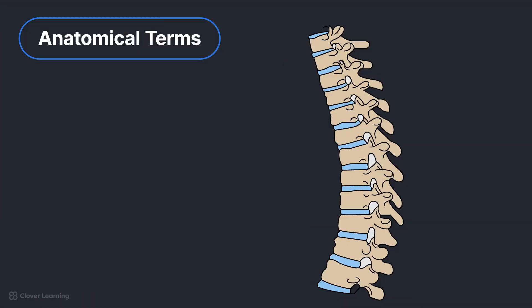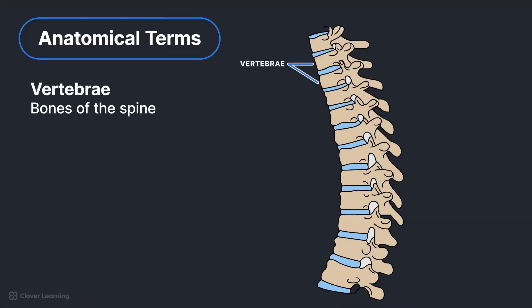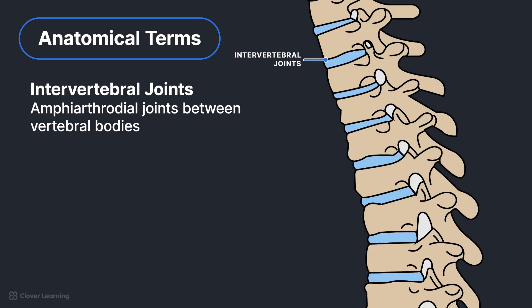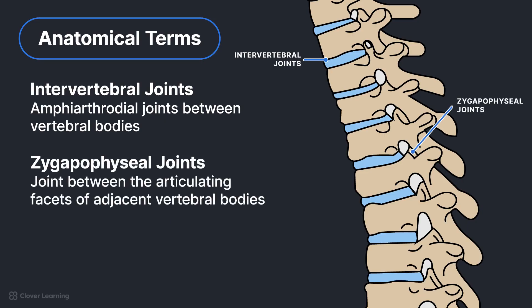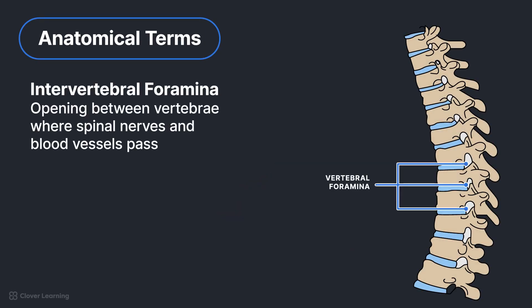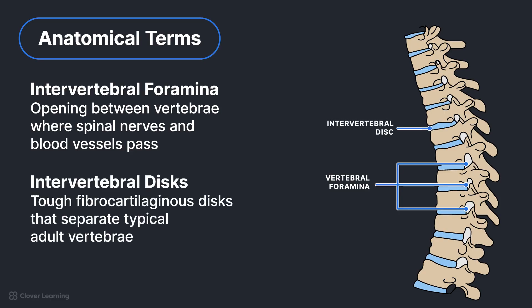Anatomical terms related to the thoracic spine include: vertebrae — bones of the spine; kyphotic — convex curvature of the thoracic spine; intervertebral joints — amphiarthrodial joints between vertebral bodies; zygapophyseal joints — joints between the articulating facets of adjacent vertebral bodies; costal joints — articulations of the ribs to the thoracic vertebrae; intervertebral foramina — openings between vertebrae where spinal nerves and blood vessels pass; and intervertebral discs — tough fibrocartilaginous discs that separate typical adult vertebrae.